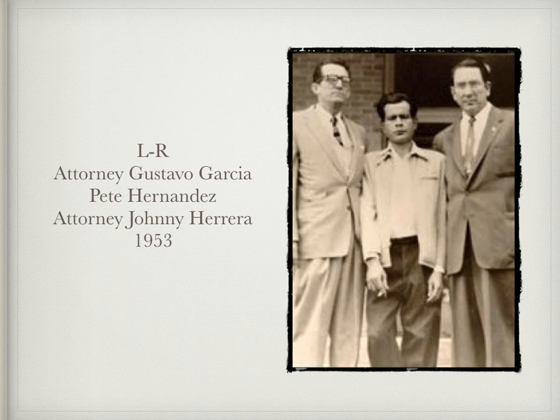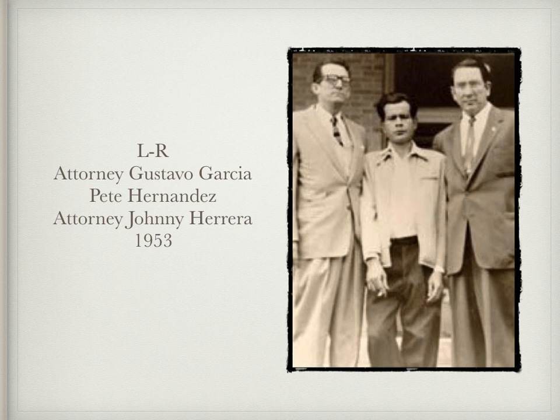The Warren Court said no, it's not a two-class system, and the 14th Amendment extends to other racial groups and communities depending on whether it can be factually established that such a group exists within a community. In reversing, the court concluded that the 14th Amendment is not directed solely against discrimination due to the two-class theory, but in this case it also covers those of Mexican ancestry.